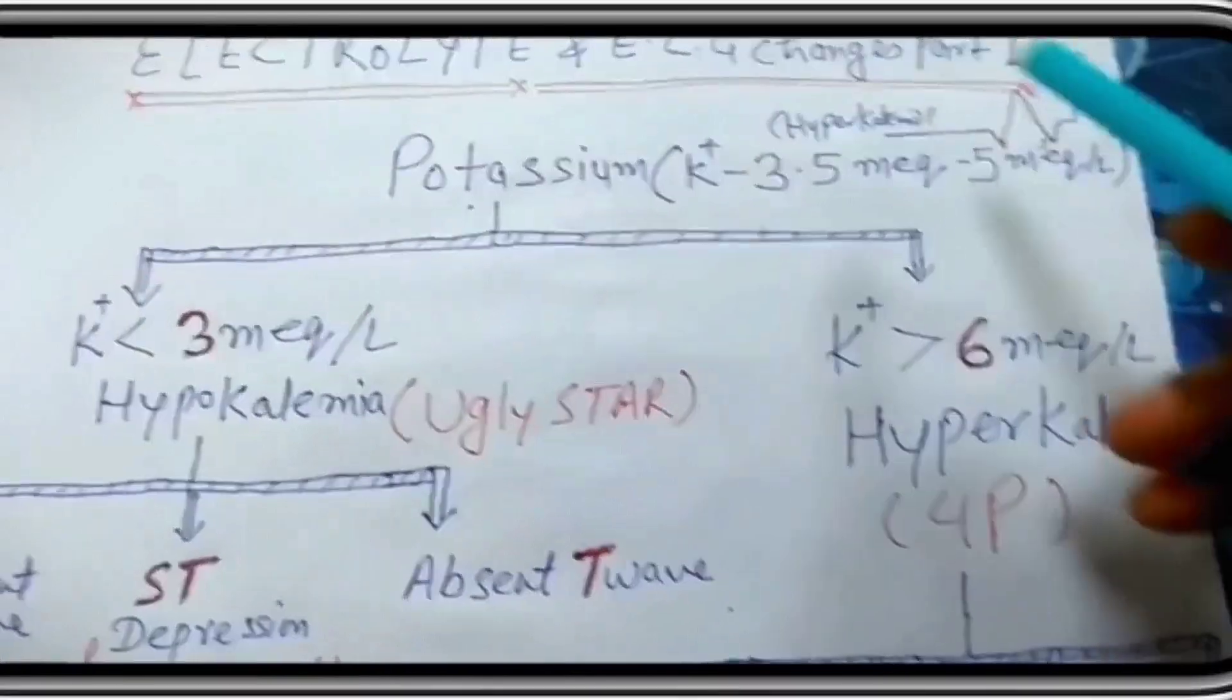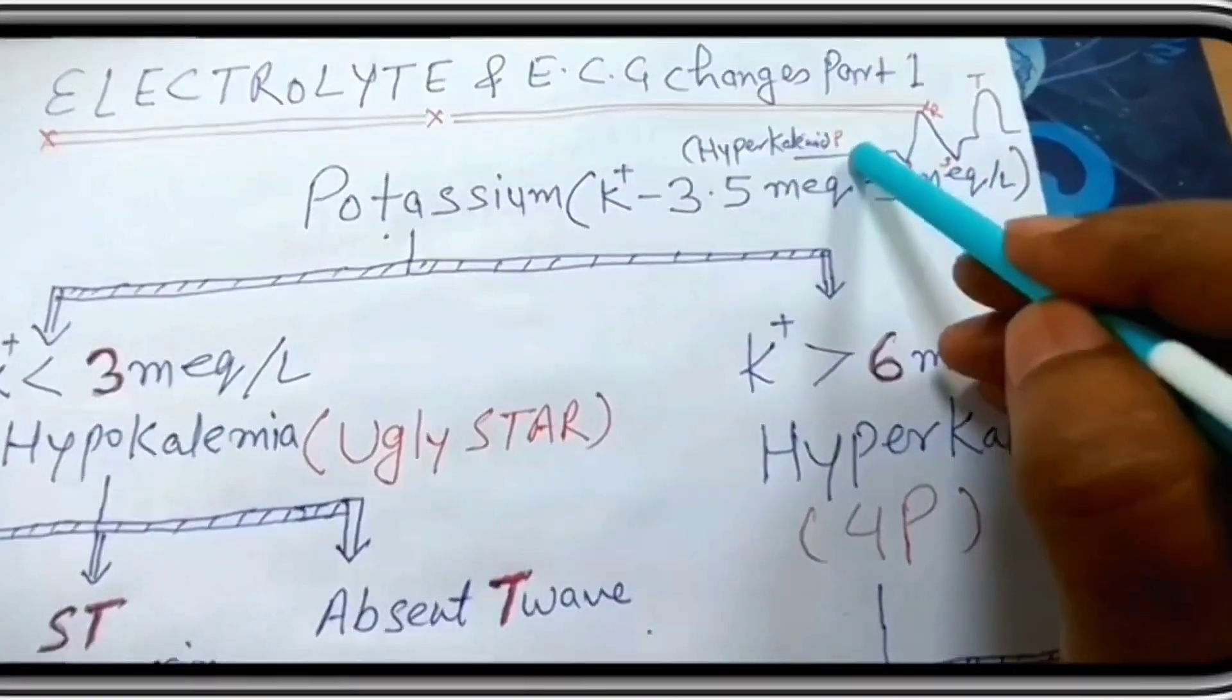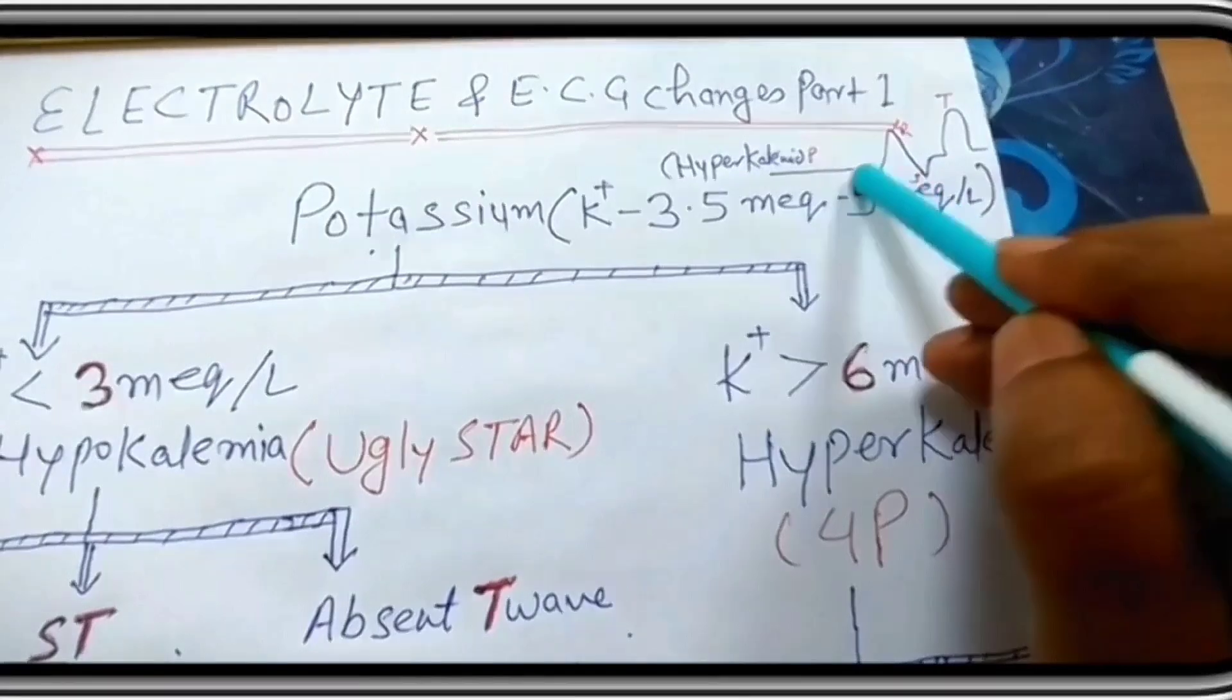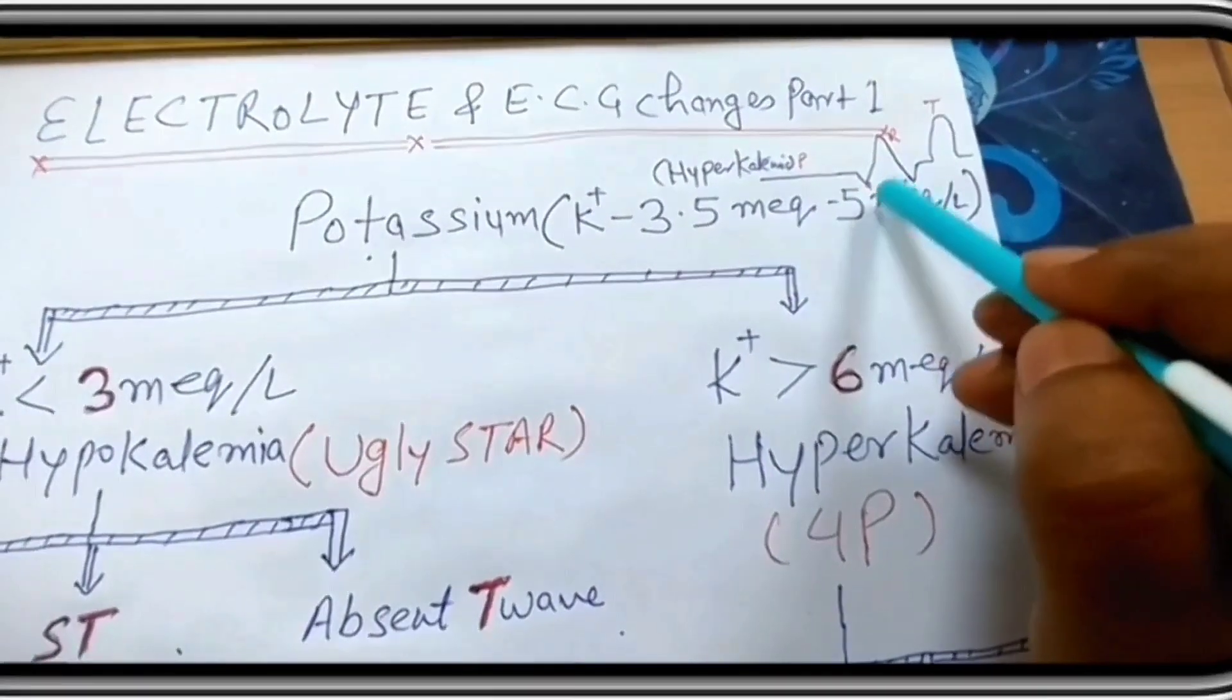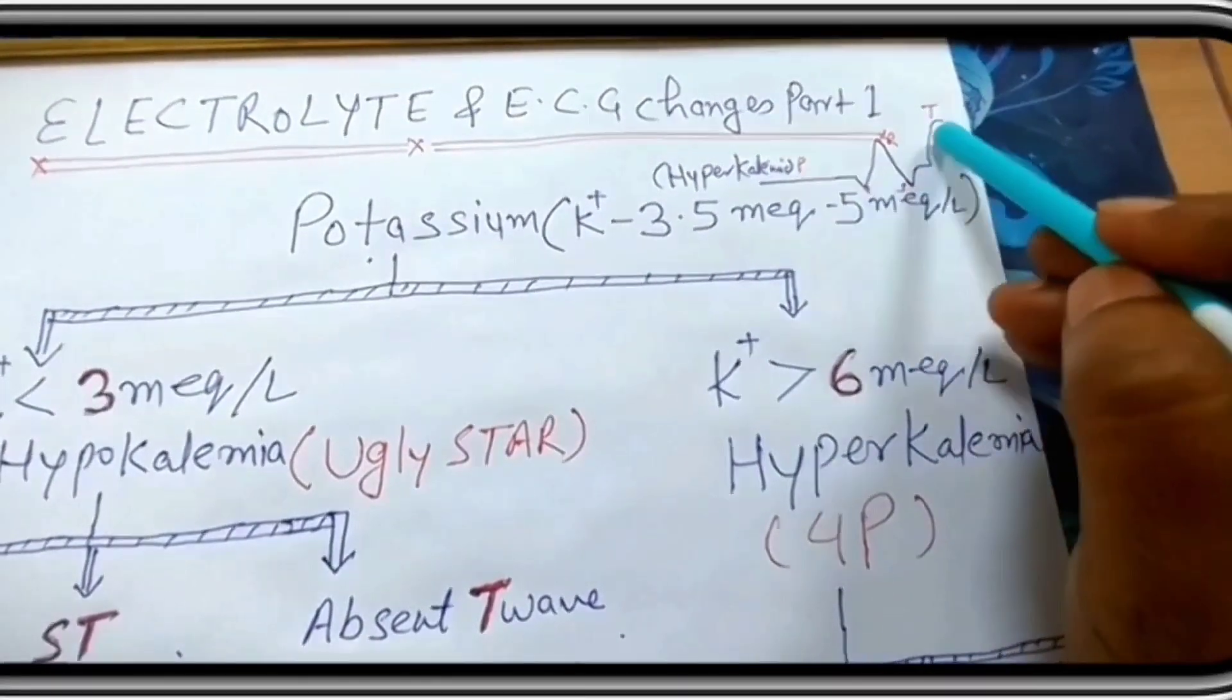And this is the ECG of hyperkalemia. See flat P wave, then this is prolonged PR interval. This is QRS complex wide, and this is peak T wave.